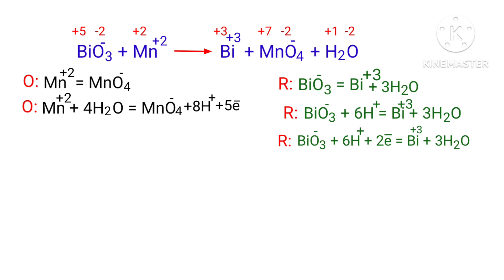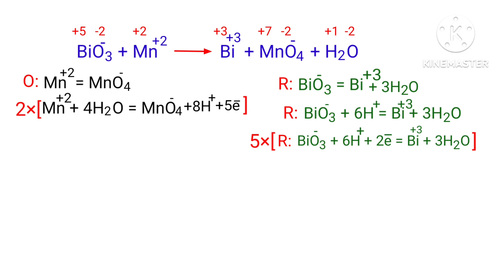Make electron gain equivalent to electron loss. The electrons lost in the oxidation half-reaction must equal the electrons gained in the reduction half-reaction. The oxidation half-reaction has 5 electrons and the reduction half-reaction has 2 electrons. Multiply the oxidation half-reaction by 2 and the reduction half-reaction by 5 to equalize the electron count.